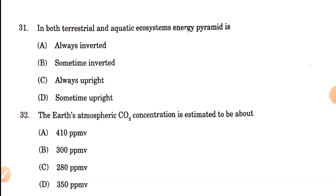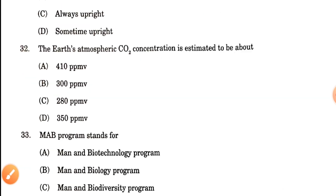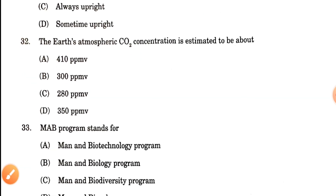Question number 31: In both terrestrial and aquatic ecosystems, the energy pyramid is what? The energy pyramid is always upright — whether it is a terrestrial ecosystem or an aquatic ecosystem. So option C is the correct answer.